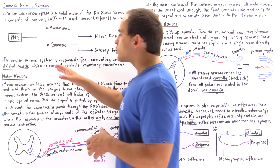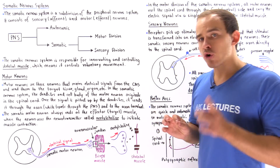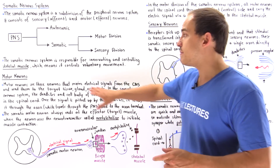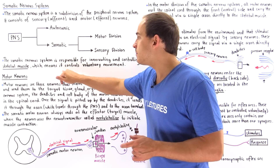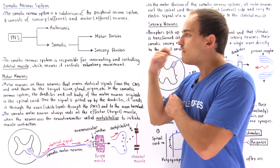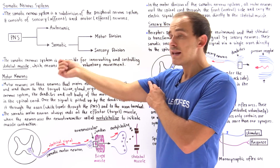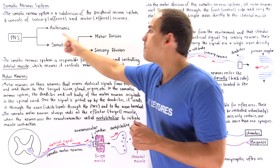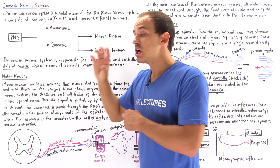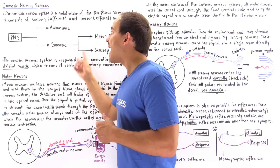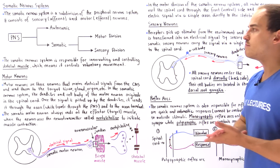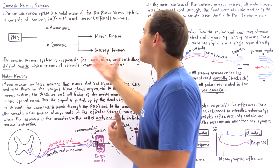The somatic nervous system is responsible for innervating and controlling skeletal muscles and skeletal tissue, which means the somatic nervous system is ultimately responsible for voluntary movement. For example, if I want to bend and extend my arm, this requires the somatic nervous system. It is the brain that initiates the electrical signal, but it is the somatic nervous system that actually extends my arm.